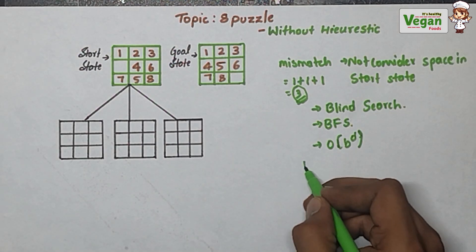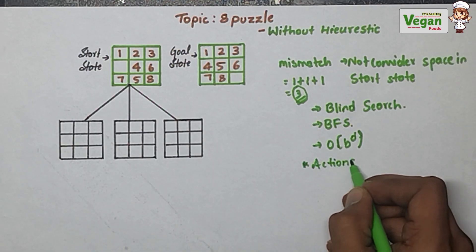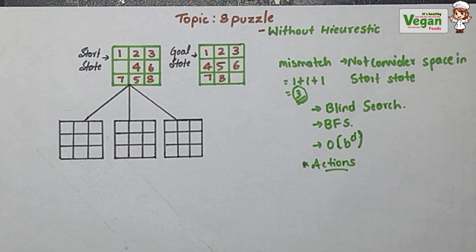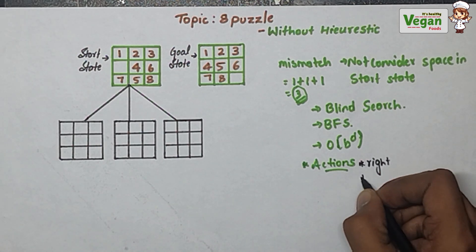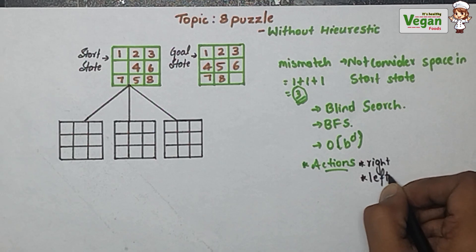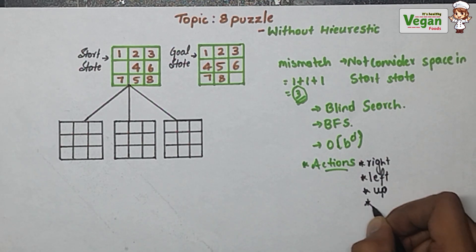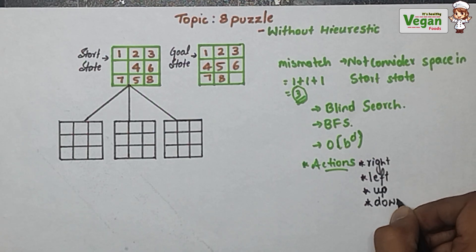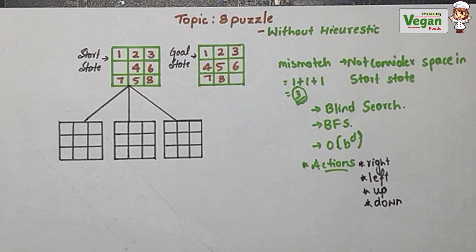In the 8 puzzle, we will have four possible actions: move towards the right, move towards the left, move upside, and move downside. So right, left, up, and down are the four possible cases — these are the maximum actions.